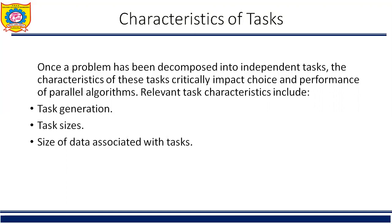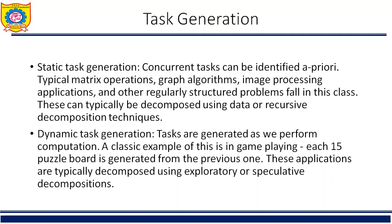Task generation: The tasks that constitute a parallel program or algorithm may be generated either statically or dynamically. Static task generation refers to the scenario where all the tasks are known before the algorithm starts execution. Data decomposition usually leads to static task generation. Examples include matrix multiplication and LU factorization. Recursive decomposition can also lead to a static task dependency graph — finding the minimum of a list of numbers is an example.